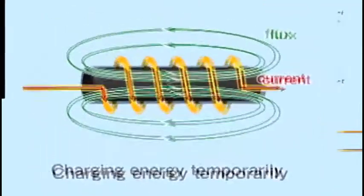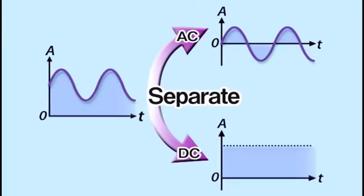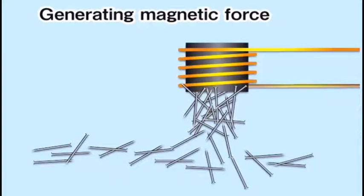Functions of the inductor include temporary storage of energy, AC and DC separation and selection, phase shift between voltage and current, and magnetic field generation.